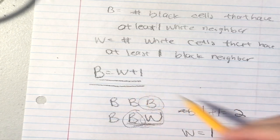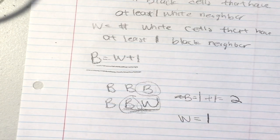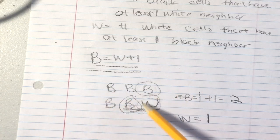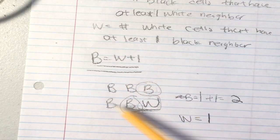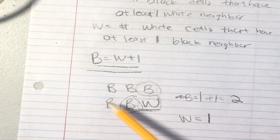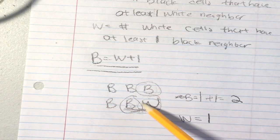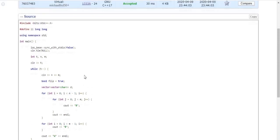As you can see, B equals W plus one — that's all there is to this problem. You just fill everything with B's and leave one white cell on a corner, either bottom-right or top-left. It doesn't matter which corner you choose, just make sure the white cell is on a corner.